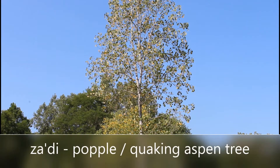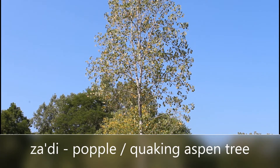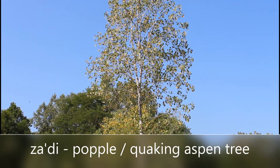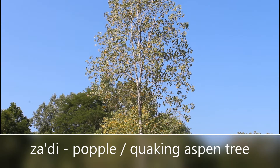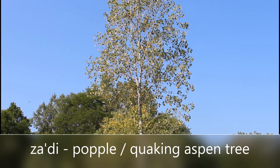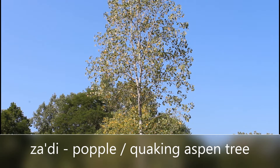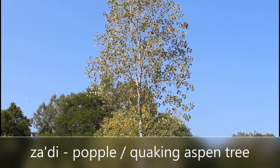This here is about the most common tree you'll find in the state of Michigan. It's called a popple, also known as a quaking aspen. We call it zadi — a popple or aspen tree.